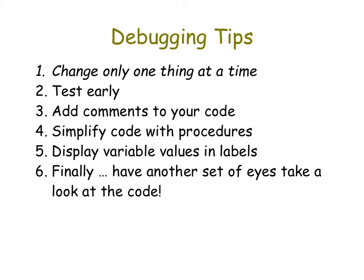You can also display variable values in labels. For example, if you're writing a program where an object is moving faster and faster, you'll have something in the code that declares the speed as a certain value. If you're watching the program and don't think it's moving faster like it's supposed to, you can add a little text box somewhere so that when you're watching it, it shows you the value of the speed. That's just for debugging — once you publish the program, you would remove it so the user doesn't see it.